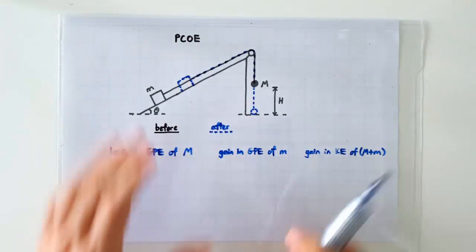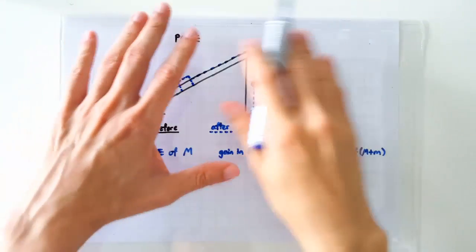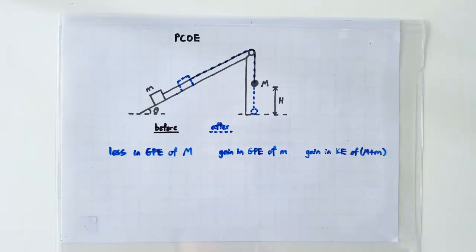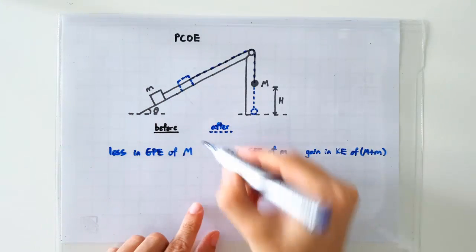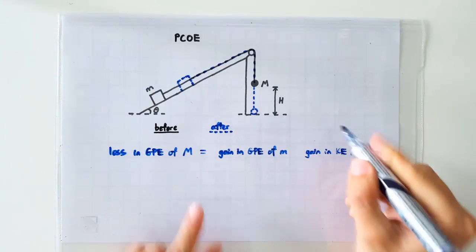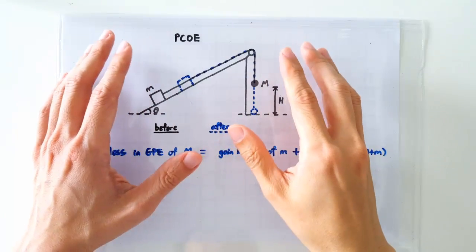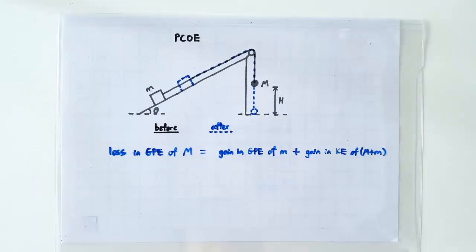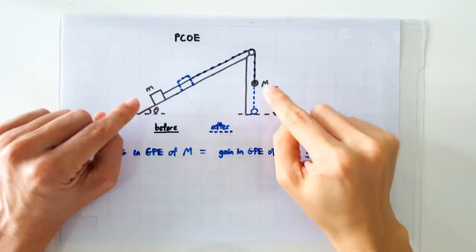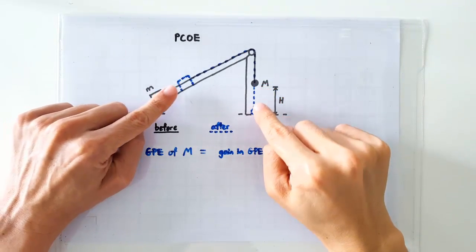The magical thing about the principle of conservation of energy is that if there's no net external force doing work on this system, then the losses will be equal to the gains, since the total amount of energy in the system should remain constant.